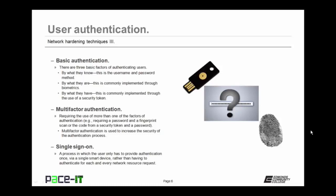There are three basic factors for authenticating users. There's by what you know — the username and password method. By what you are — commonly implemented through biometrics. And by what you have — commonly implemented through the use of security tokens. You can combine these in a process called multi-factor authentication. That's requiring the use of more than one of the factors of authentication, as in requiring a password and a fingerprint scan, or the code from a security token and a password. Multi-factor authentication is used to increase the security of the authentication process.